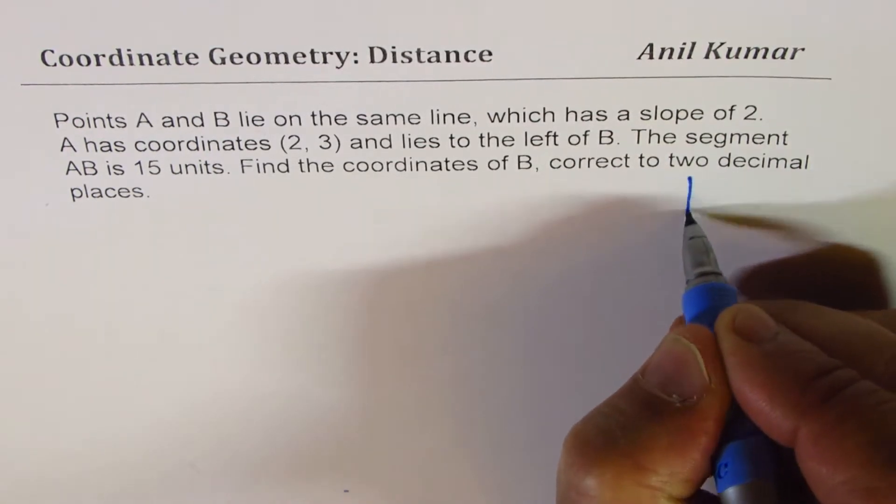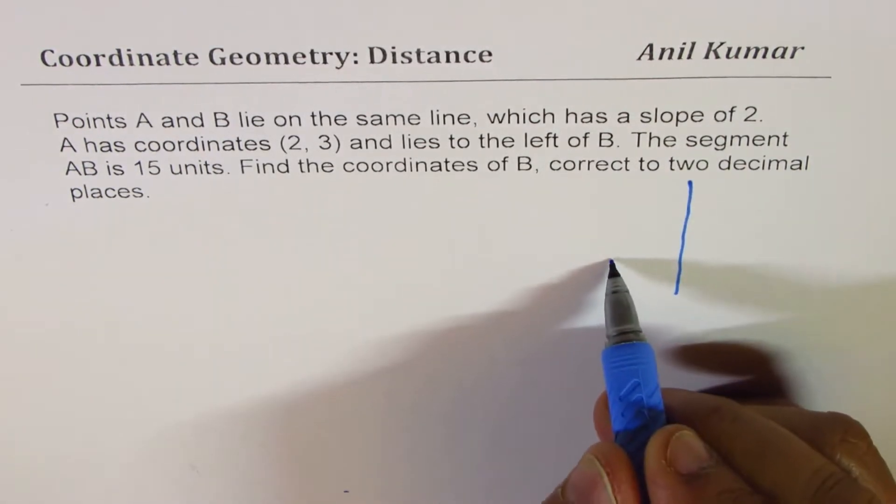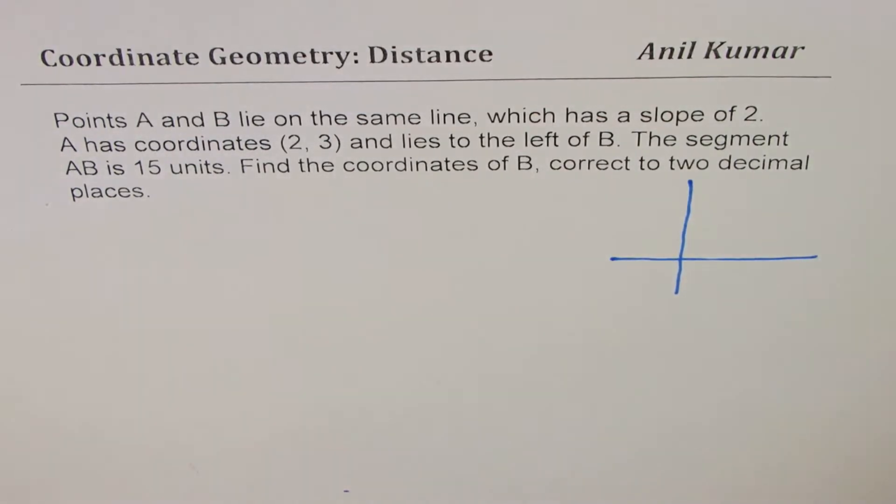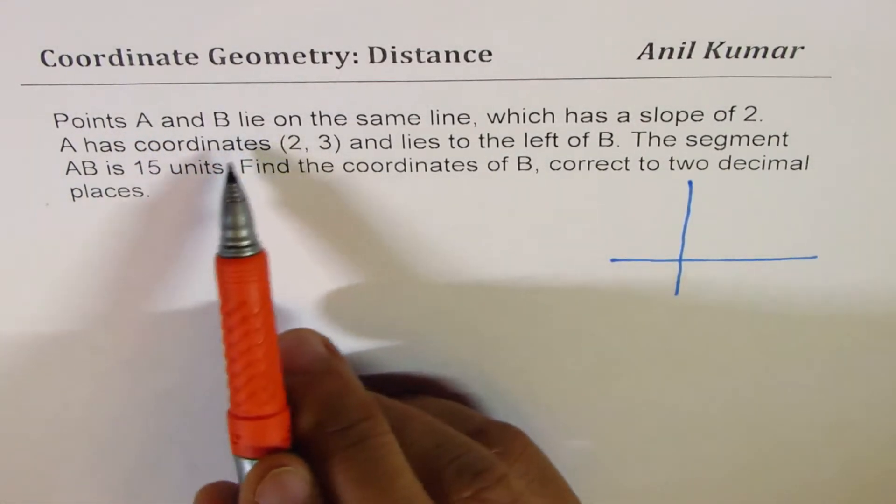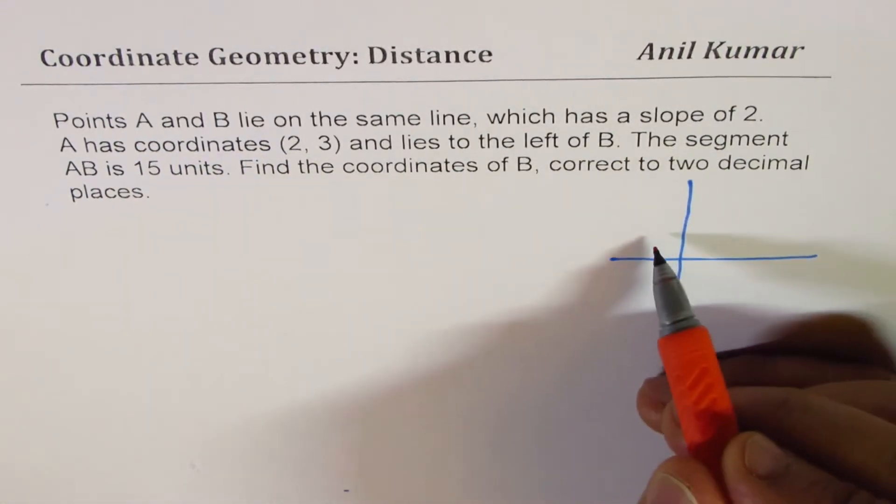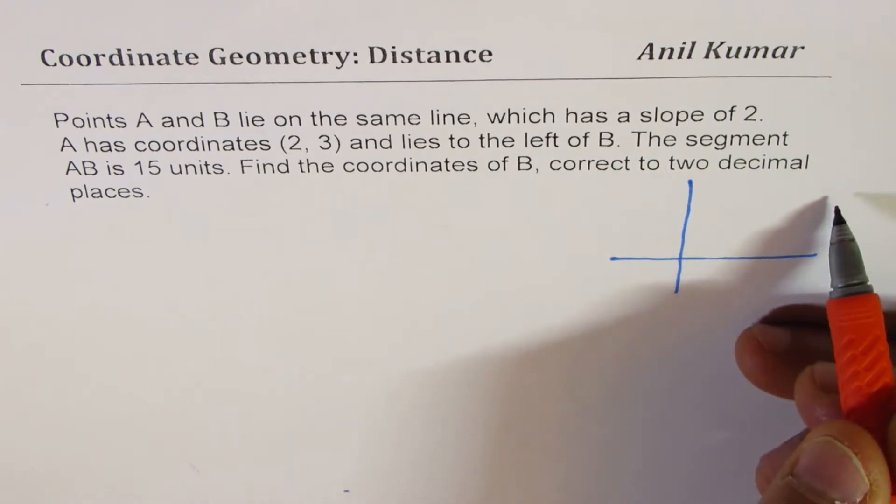Now, in such questions, it is important to sketch fairly accurately. That helps. Now, we are given point A is on the left of B. So, somewhere here is A and B is on the right side.